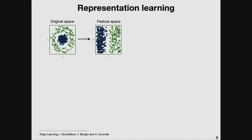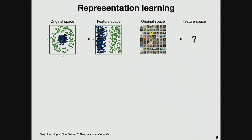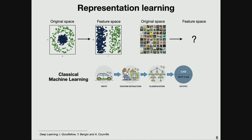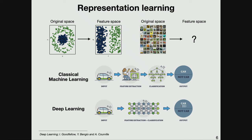For this simple problem, we know which is the right set of features, but for a generic problem we don't. For example, if we have a set of images and want to find the feature space in which classification is easy, it's not straightforward. For many years, people in classical machine learning tried to detect these features by hand. However, in the deep learning regime, feature extraction and classification are performed automatically by the deep neural network.